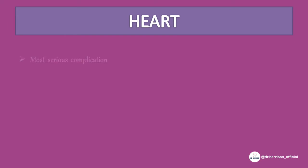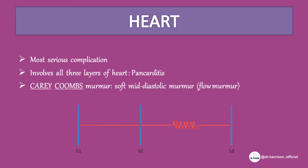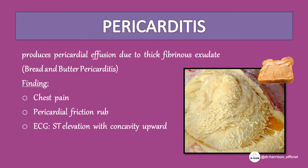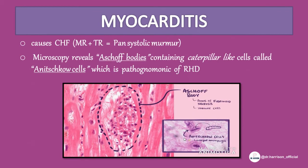Carditis is the most serious complication and involves all three layers of the heart, causing pancarditis. Carey Coombs murmur is classical of RHD — it is a soft mid-diastolic murmur. Pericarditis produces pericardial effusion due to thick fibrinous exudate, hence called 'bread and butter pericarditis.' Findings in pericarditis: chest pain, pericardial friction rub, and ECG showing ST elevation with concavity upward. Treatment is steroids.